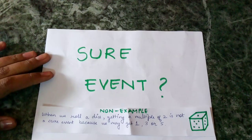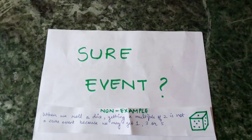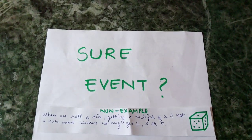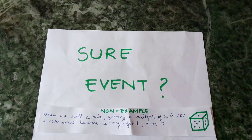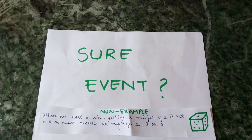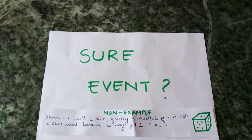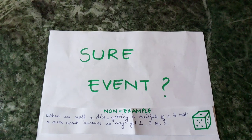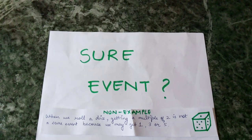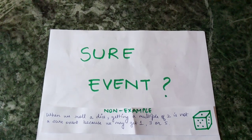When we roll a dice, getting a multiple of 2 is not a sure event because we may get 1, 3, or 5. And these are not multiples of 2. Hence, getting a multiple of 2 is not a sure event.